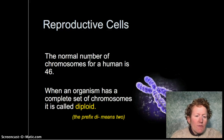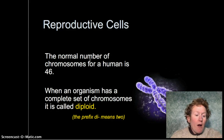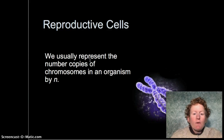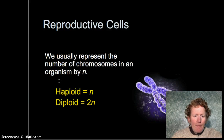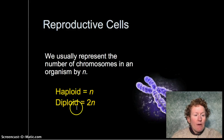The normal number of chromosomes for a human is 46. When an organism has a complete set of chromosomes, it's called diploid — that means two. You could ride a bicycle or a dicycle; they both have two wheels. We usually represent the number of copies of a chromosome by the letter N. Haploid cells are 1N, and diploid cells are 2N.